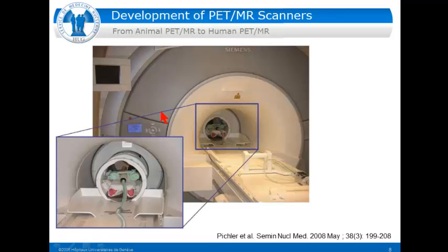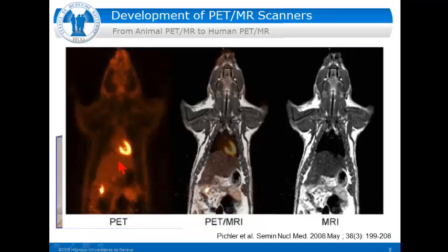How did we get from small animal PET-MR to human PET-MR? The first human PET-MR was not an integrated system — it was still working with an insert on a regular three Tesla MR, developed by the same Tübingen group. They developed a head insert with a small diameter containing the detection elements. The first scans were still of mice since it wasn't yet suitable for a whole human. However, the first whole-body mouse images demonstrated truly inline, simultaneous PET-MR acquisition.